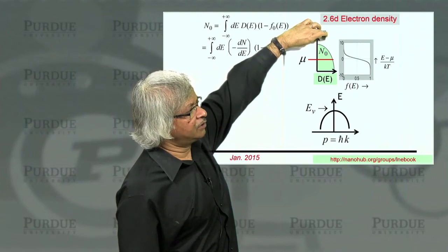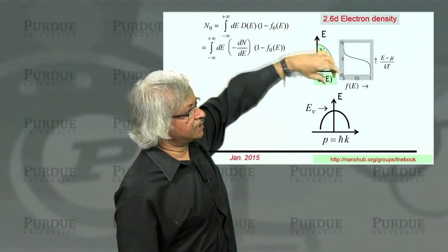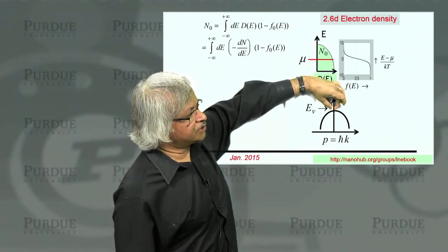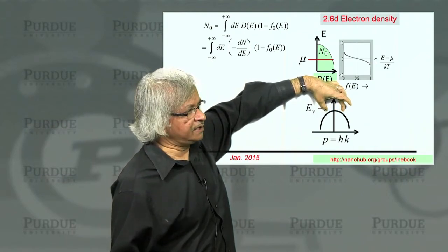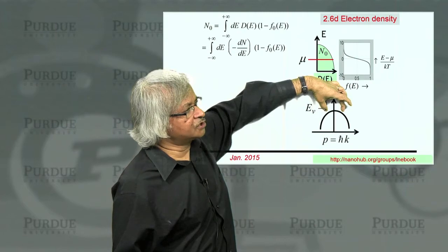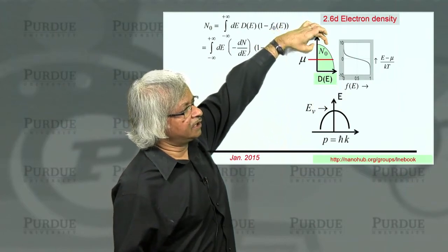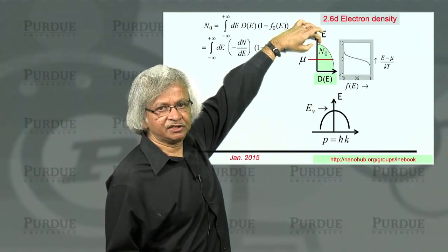N of P tells you how many states are available below a certain value of P, and that corresponds to how many states are available above a certain energy E.